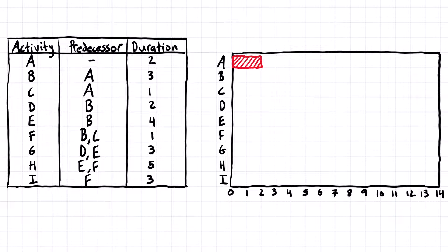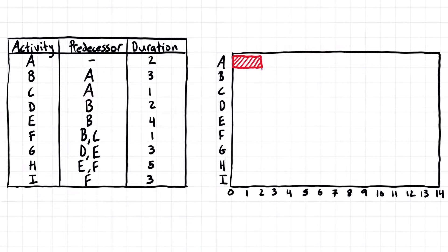Activity B depends on activity A, so it can't start until activity A has finished, and it's three days long. So we come to the Gantt chart, we find where activity A finishes, and that's going to be where activity B starts, and it is three days, so we'll come across three days.